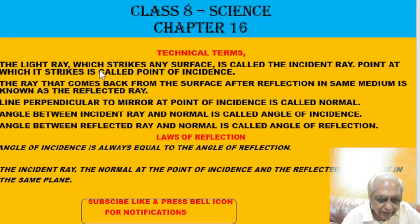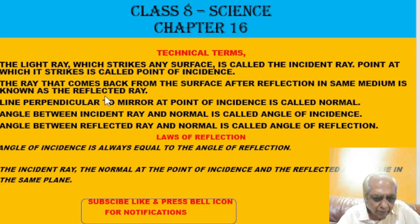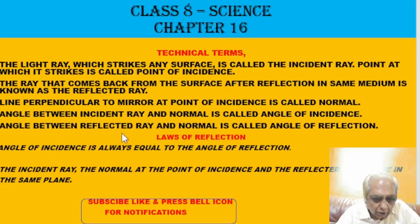The light ray which strikes any surface is called the incident ray. The point at which it strikes is called the point of incidence. The ray that comes back from the surface after reflection in the same medium is known as the reflected ray. The line perpendicular to the mirror at the point of incidence is called the normal. The angle between the incident ray and the normal is called the angle of incidence; the angle between the reflected ray and the normal is called the angle of reflection. The first law of reflection states that the angle of incidence always equals the angle of reflection.